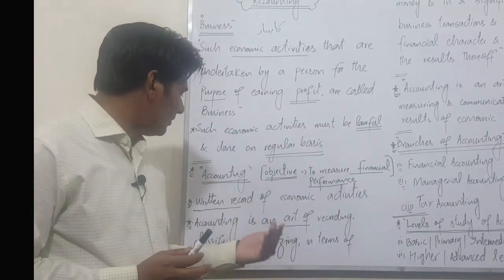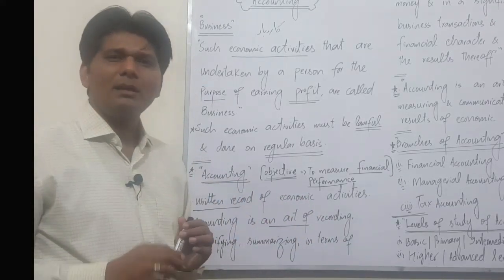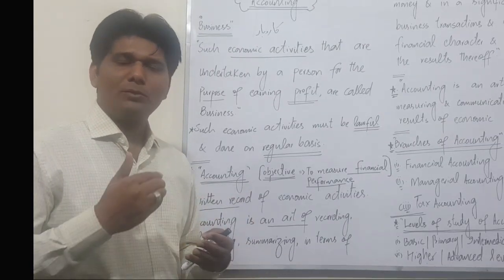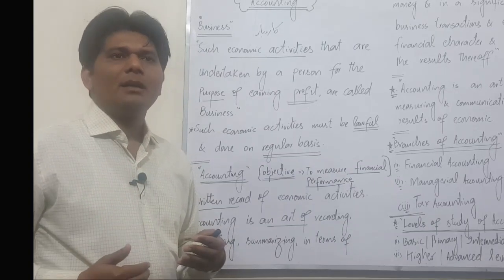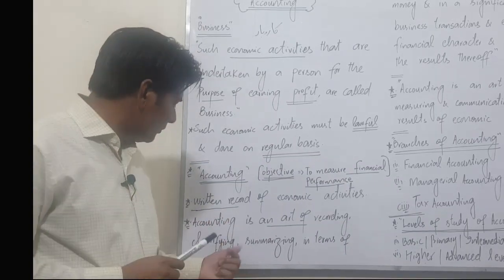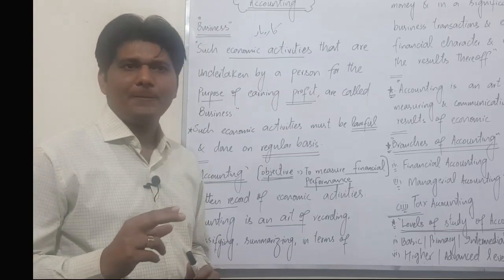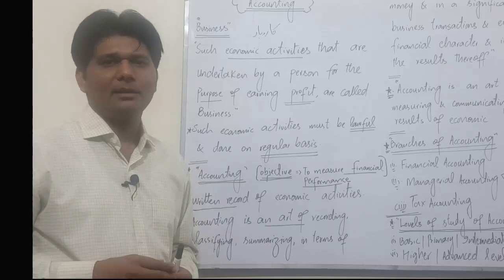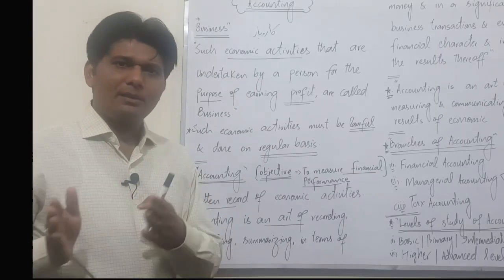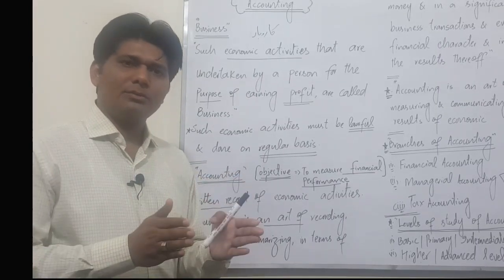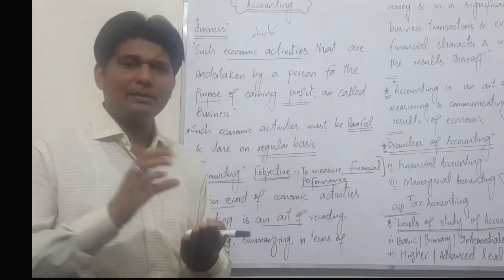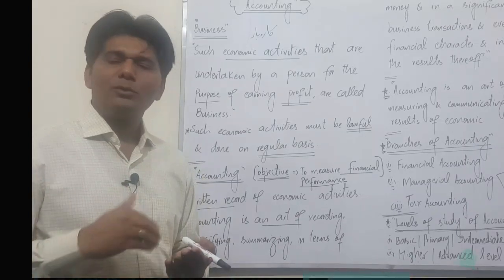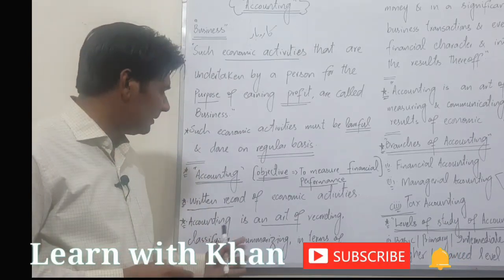Accounting is an art of recording — record karna, dherj karna. The transactions that are happening must be recorded somewhere, entries must be made. Once recorded, you must classify them — grow-bendi karna — meaning similar transactions are grouped together: similar transactions in one place, different types in separate places. That process is called classifying.